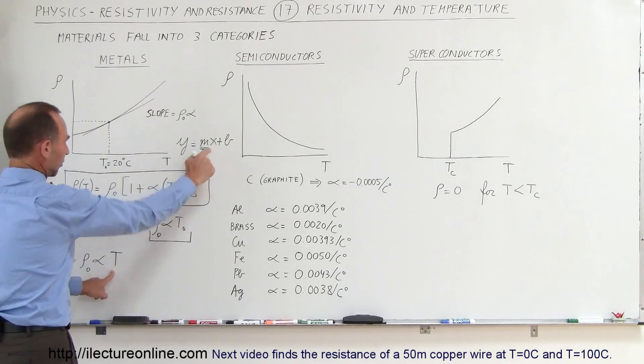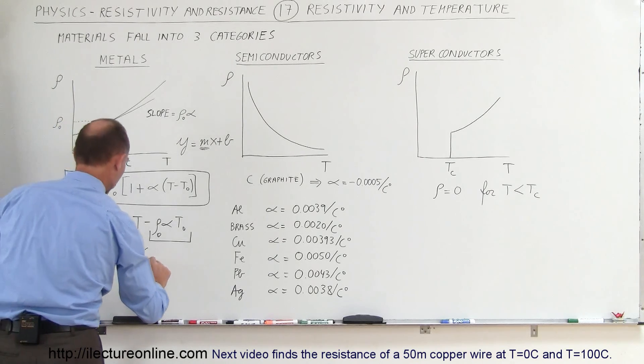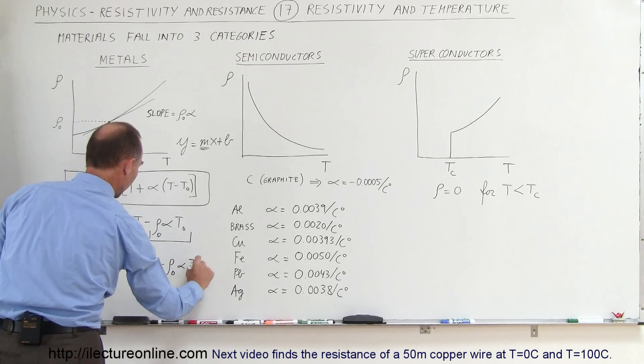Then we have plus this quantity in parentheses: resistivity at 20 degrees centigrade minus this term right there.